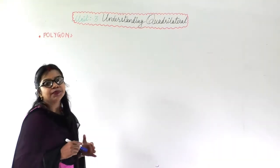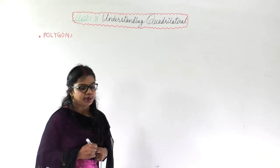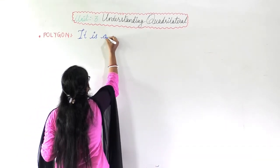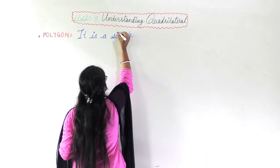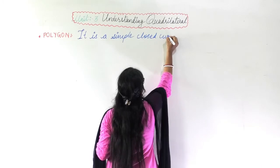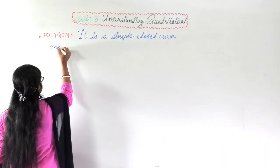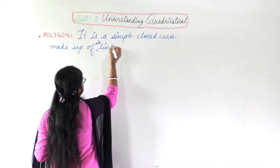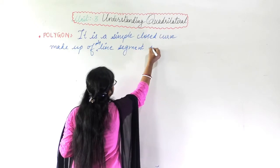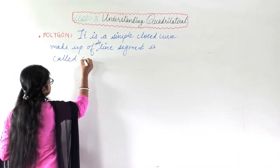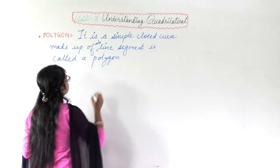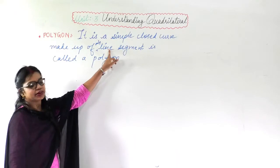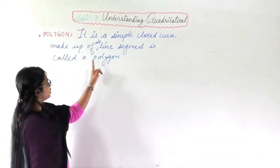So what is a polygon? A polygon is a simple closed curve made up of line segments only. It means it should be a closed curve and made up of only line segments. A closed curve plus line segments together will form a polygon.